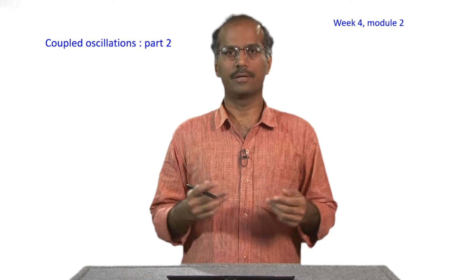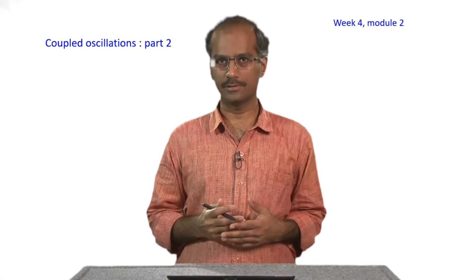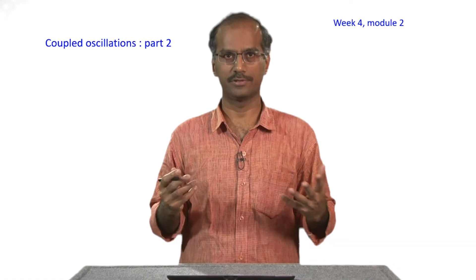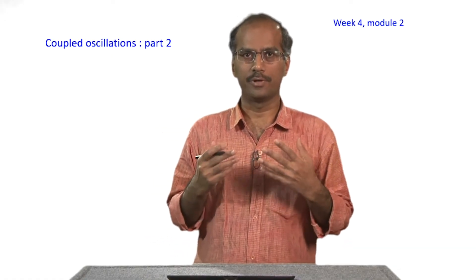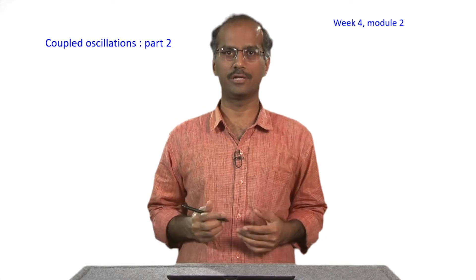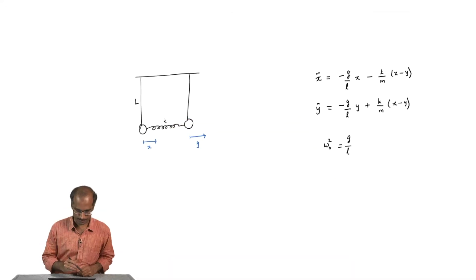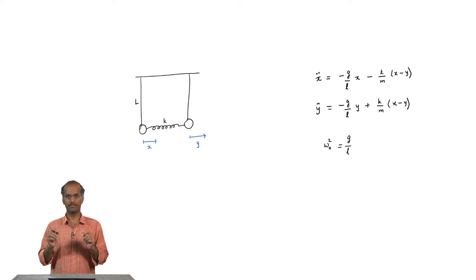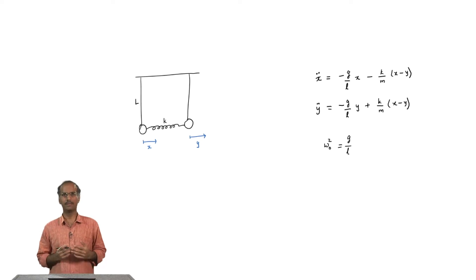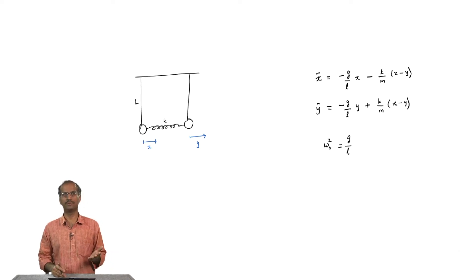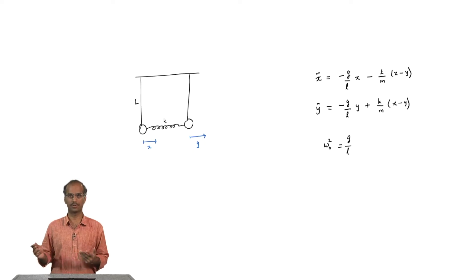By coupled oscillations we mean coupling together several particles. You can think of it as several particles coupled by a spring, for instance, but in reality you do not need a spring or any such physical object to couple objects together — it is enough if potentials interact. We looked at this example of two pendula coupled together by a spring of spring constant k. The new thing entering the picture is that when you disturb one of the particles in this system, the other one is automatically going to get the disturbance sooner or later.